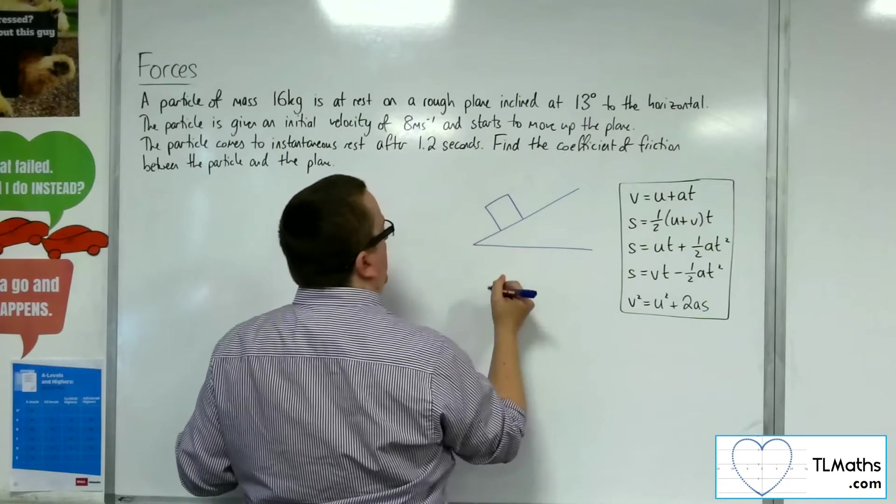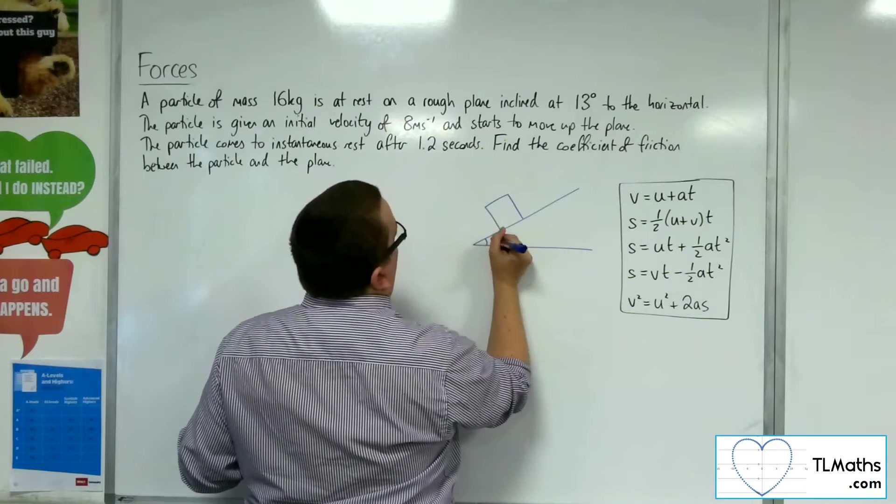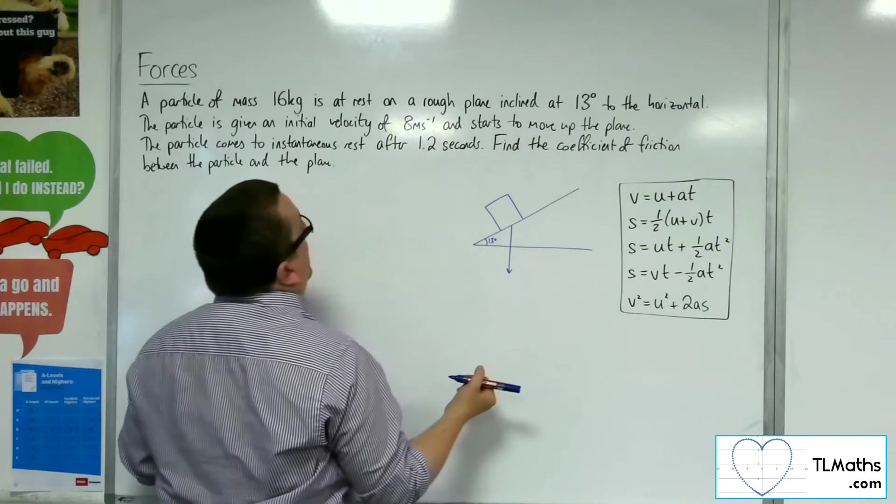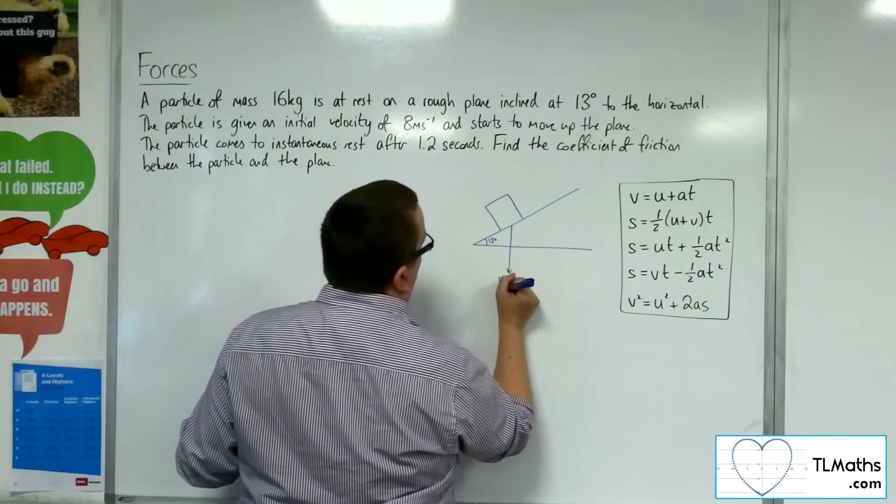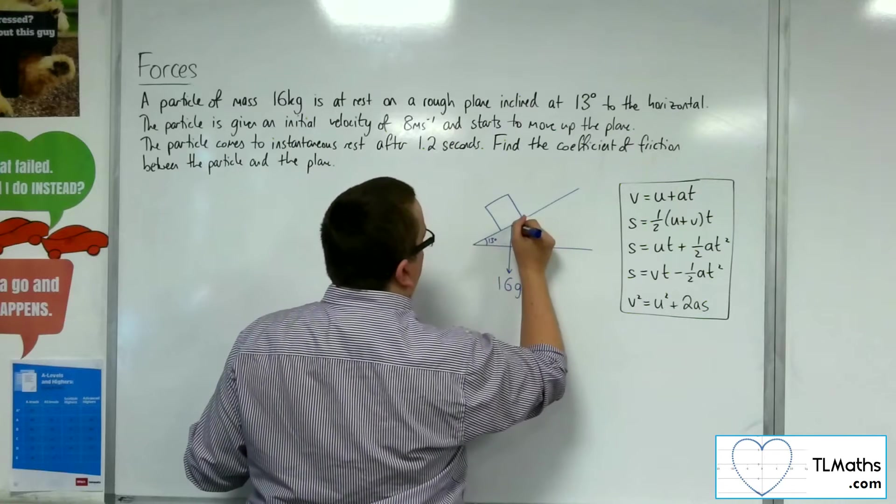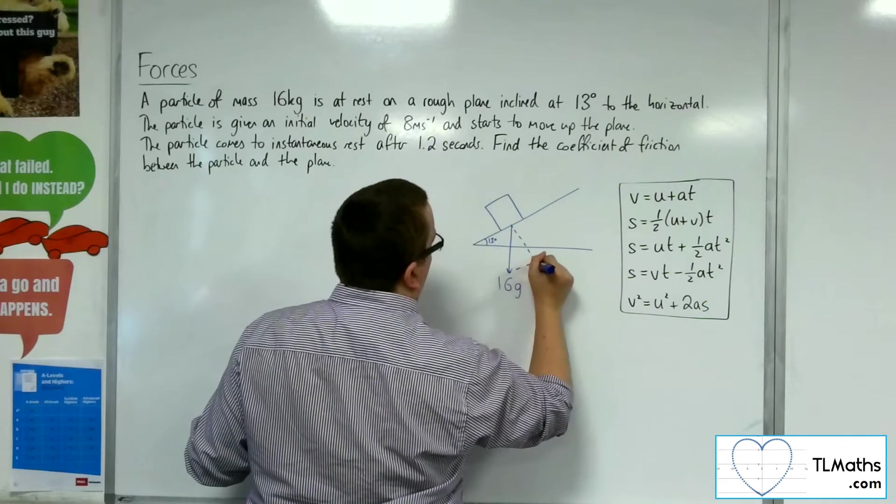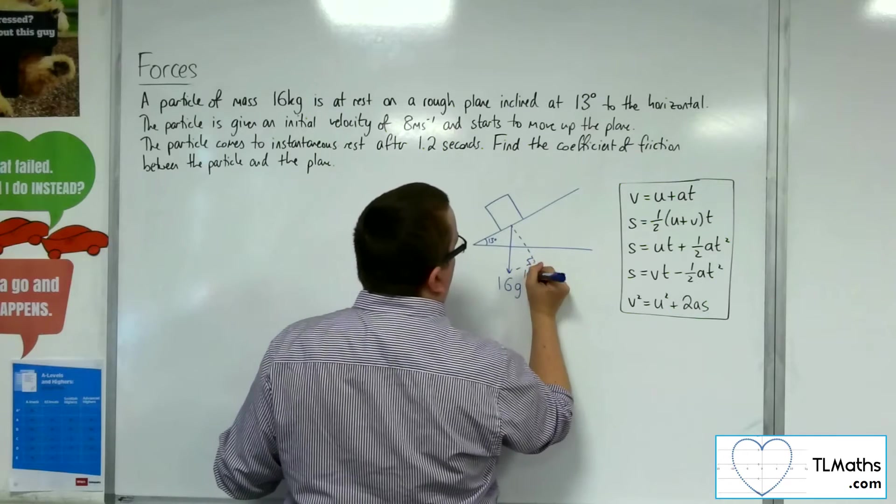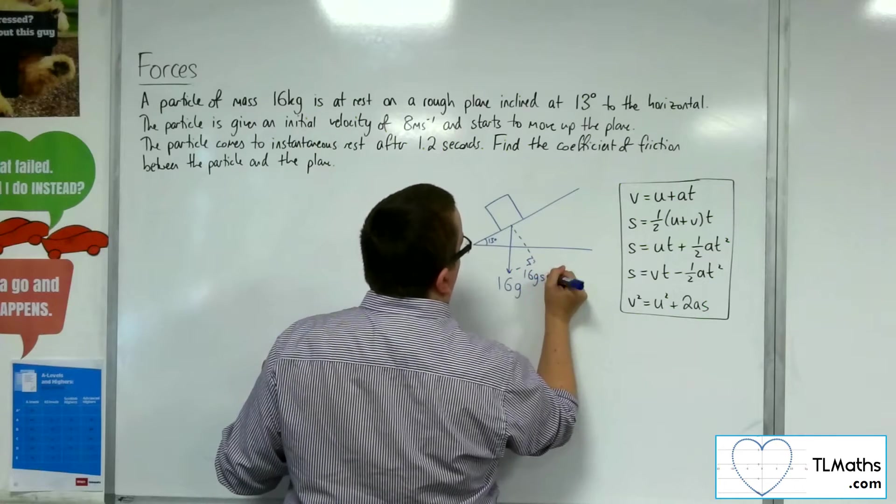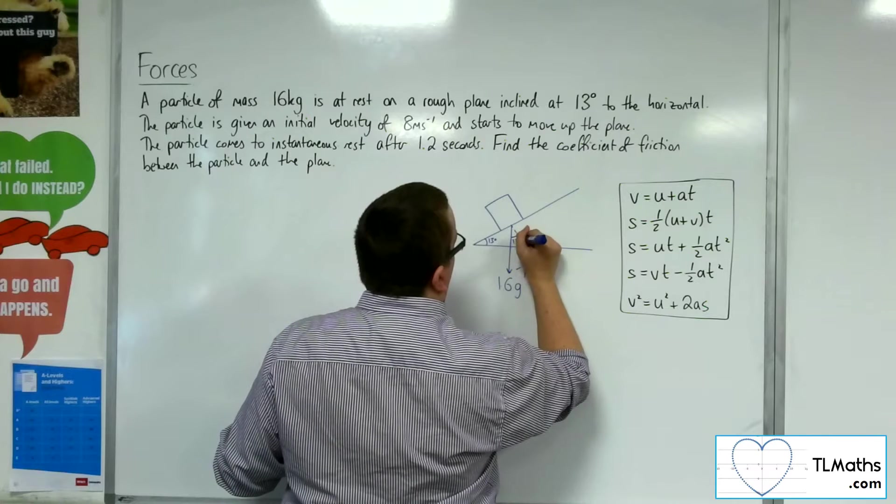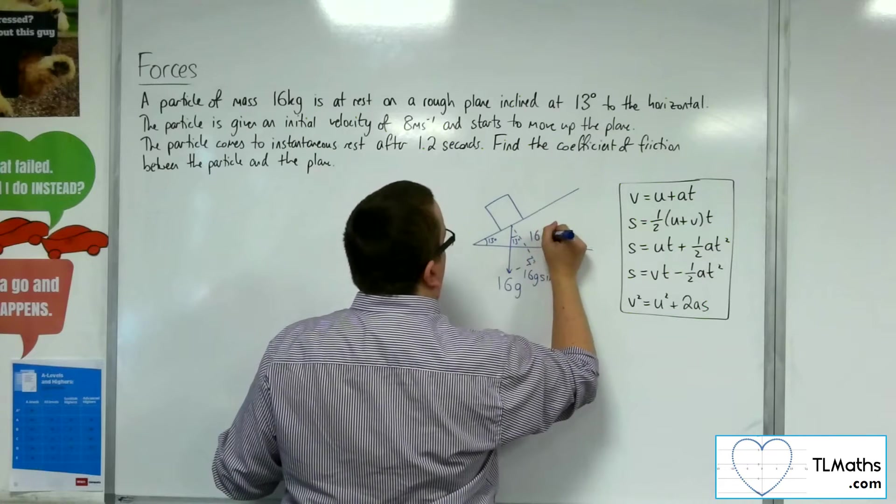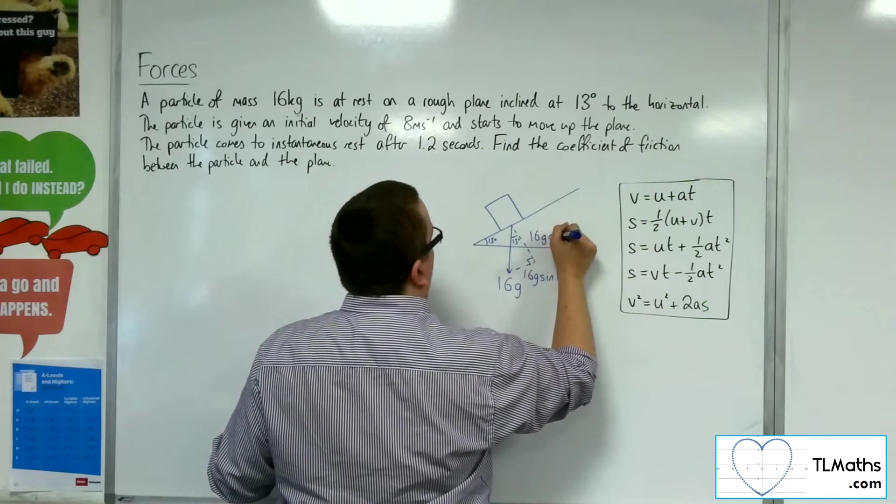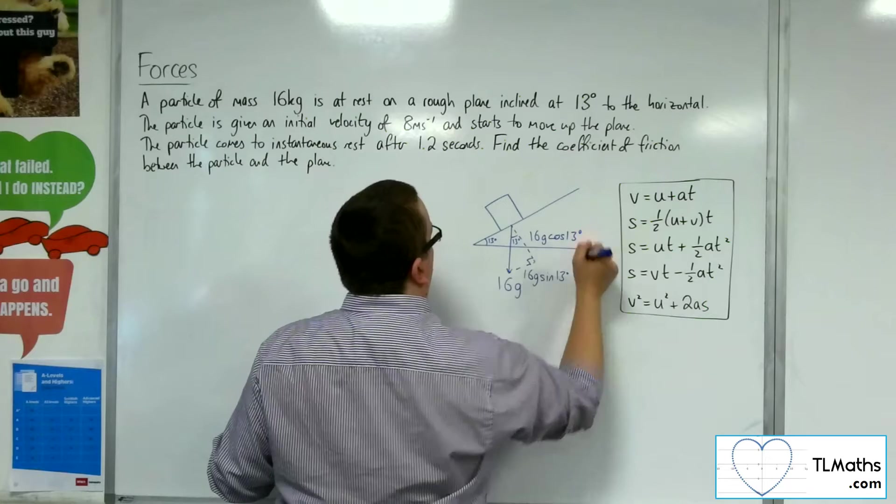Here's our particle. This angle is 13 degrees. It's got its mass of 16 kilos, so weight of 16g. Breaking it into its component parts, we're going to have 16g sine of 13 degrees and 16g cosine of 13 degrees.